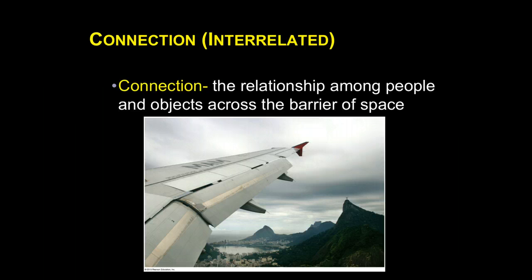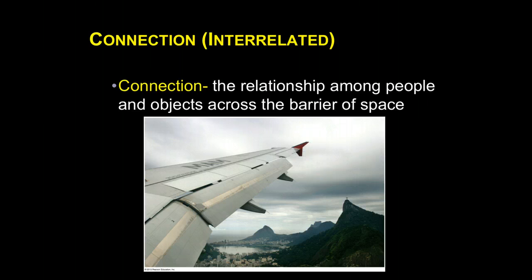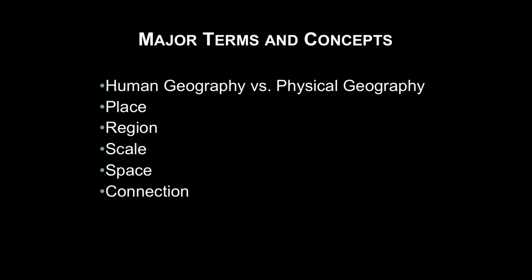And then finally, connection — how are things connected? If we look at Ipanema as a place, it's a growing city, and Rio has an international airport. With all the connections throughout the world, how do we navigate the barriers — whether distance, physical barriers, language, or cultural differences — to connect with different places throughout the world? So just recapping: the difference between human and physical geography, and then place, region, scale, space, and connection.